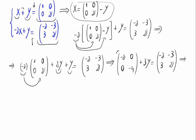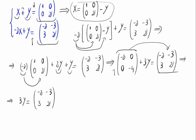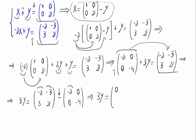We move this matrix to the other side of the equal sign with a minus sign. So 3y equals the matrix: minus 2, minus 3, 3, 2, minus the matrix: minus 2, 0, 0, minus 4. Computing this, 3y equals: minus 3, minus 3, 3, and 6.